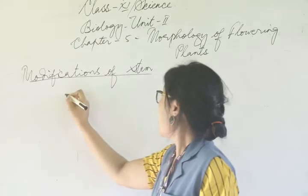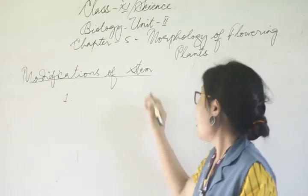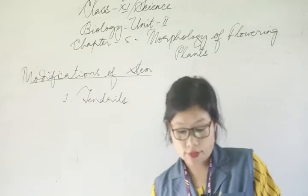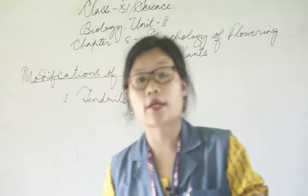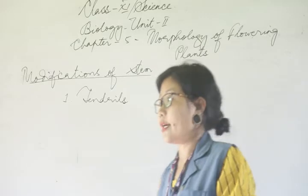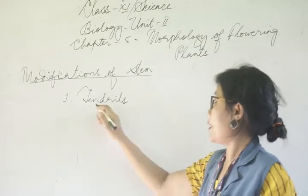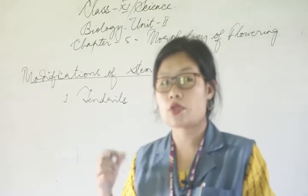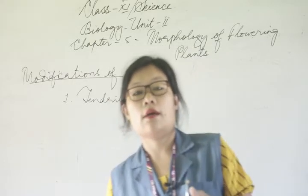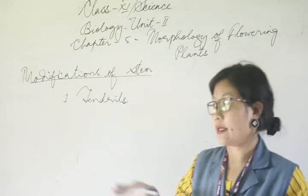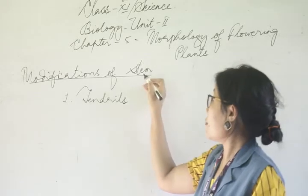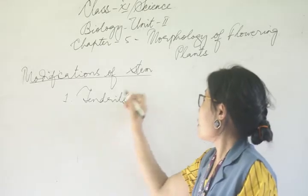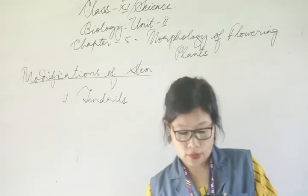First, in some plants, stems are modified into tendrils. We have a delicate stem — that part of the stem is modified into tendrils in order to climb to the support.